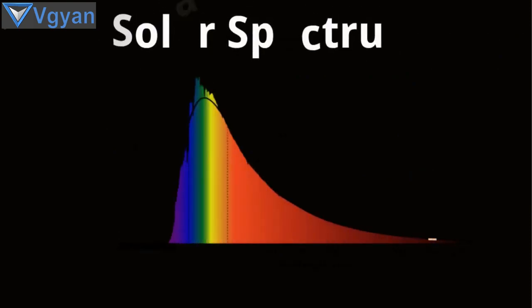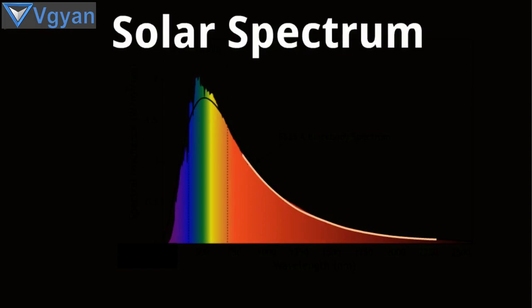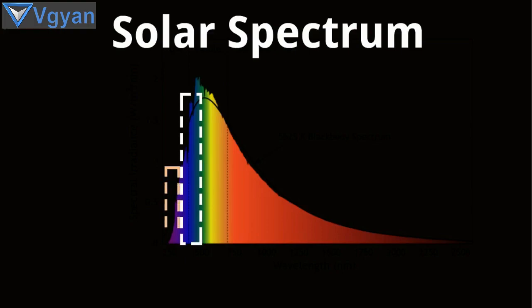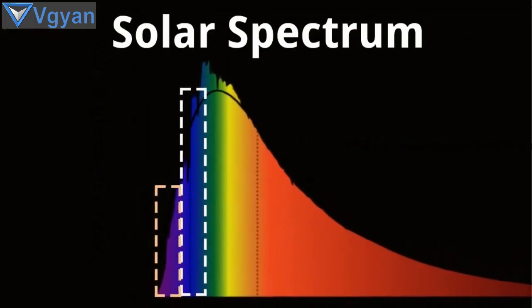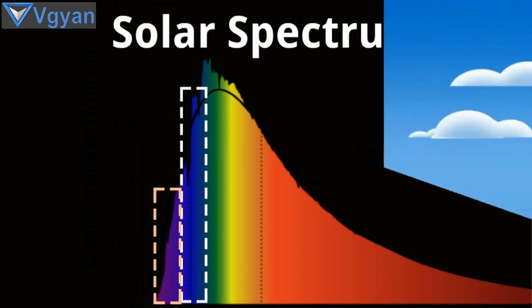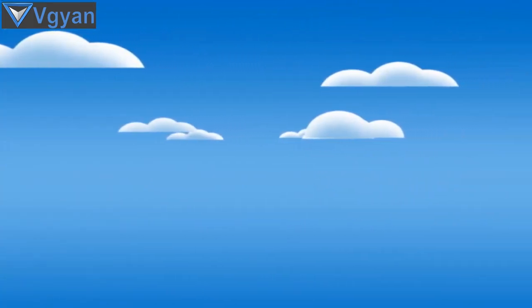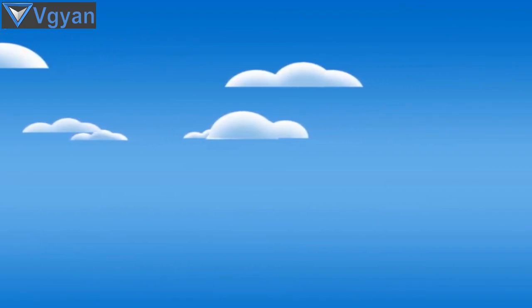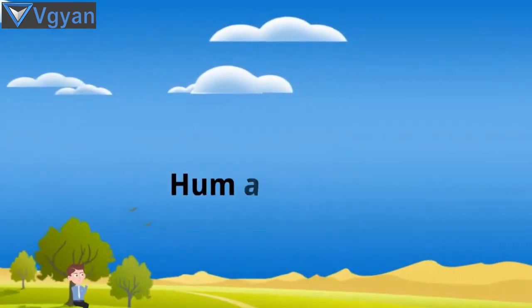Then why does it appear blue, not violet or even indigo? The reason behind this is the solar spectrum, which shows us the amount of particular light emitted by the sun. Here we can clearly observe that the amount of blue light is much larger than violet and indigo light emitted by the sun. Hence, more blue light reaches Earth and scatters than violet light, and this causes the blue color of the sky.